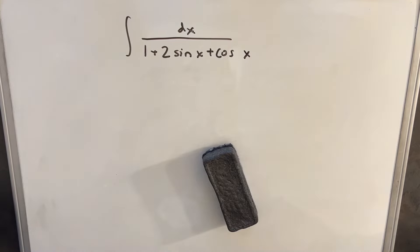Hey, we have on the board the integral of dx over 1 plus 2 sine x plus cos x. If you had other ways to solve this, let me know in the comments. I'd be interested to hear of any alternate solutions.